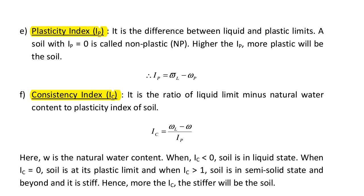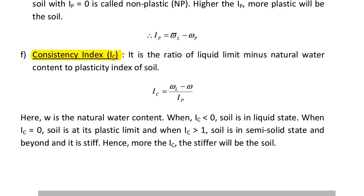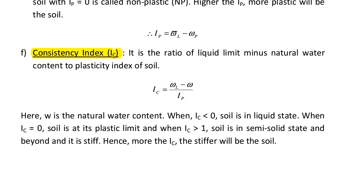Next we are going to see the definition of consistency index IC. Consistency index is the ratio of liquid limit minus natural water content to plasticity index of the soil. Consistency index IC = (WL minus W) divided by IP, where W is the natural water content. When consistency index is less than 0, the soil is in liquid state.